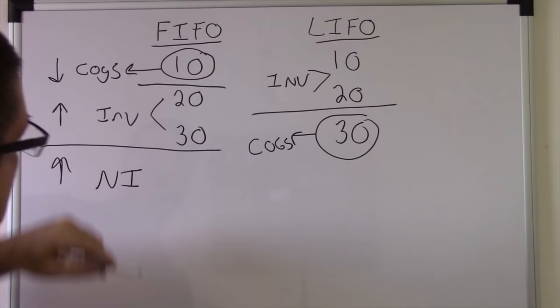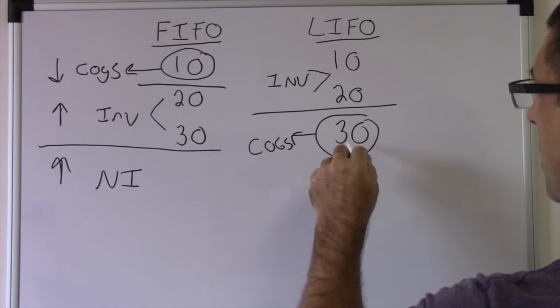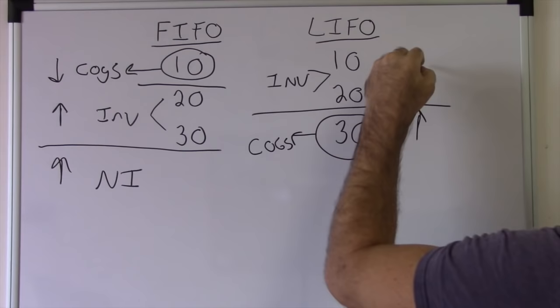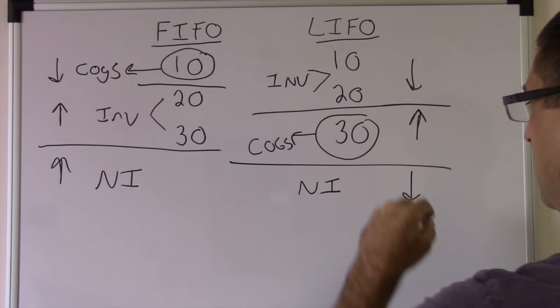What about on LIFO? If you do last in first out with rising prices, your costs are going to be higher. Your inventory is going to be lower. And your net income, if your costs are higher, that means your net income is going to be lower.